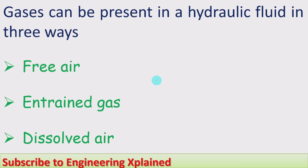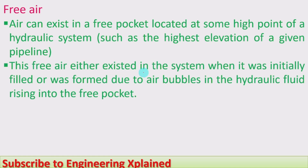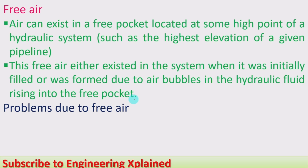The gases can be present in the hydraulic fluid in three ways: free air, entrained gas, and dissolved gas. The first one is free air, which can exist in a free pocket located at some high point of the hydraulic system, such as the highest elevation in a given pipeline. At the top position, air has lower density and will exist in the form of pockets. This free air either existed when the system was initially filled or was formed due to air bubbles rising into a free pocket during filling or operation.